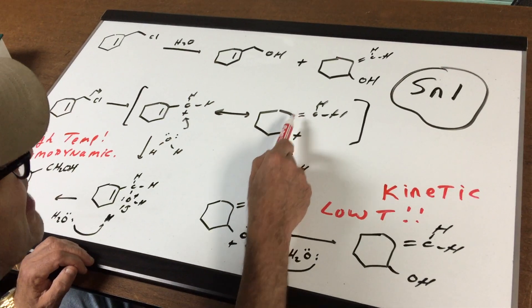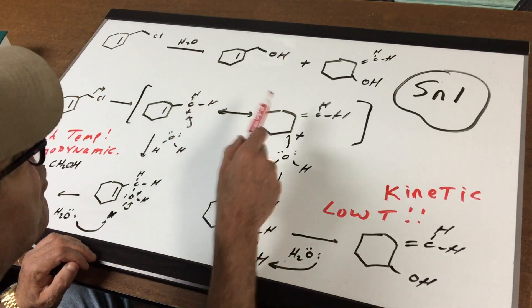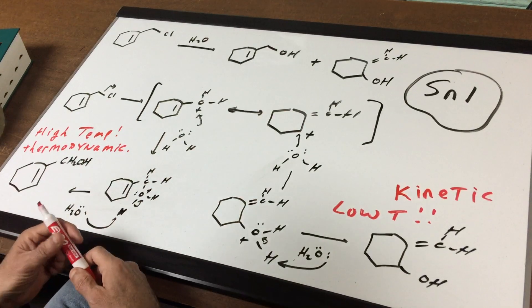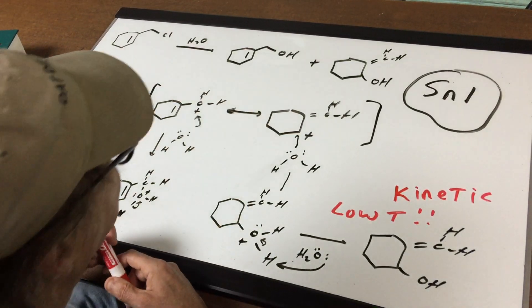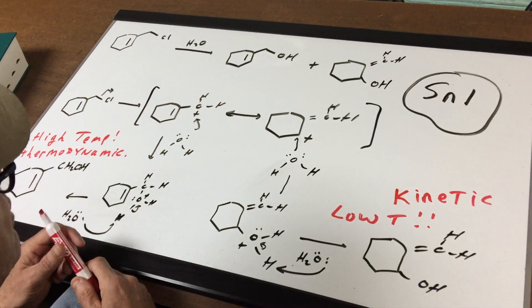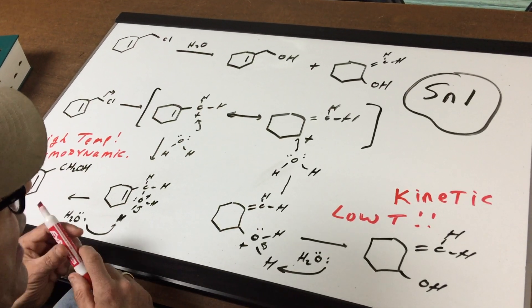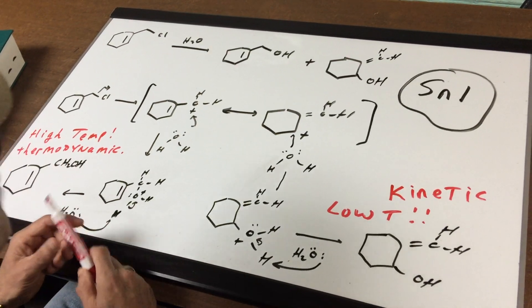And this secondary is a secondary allylic. Both are very stable. And I'm in a polar protic solvent, which is also the nucleophile. So that's going to mean that this reaction is likely going to take an SN1 path. I've got a lot of things going for me.